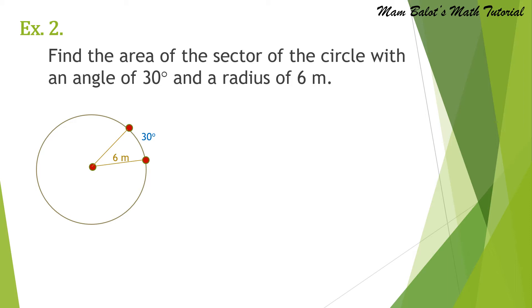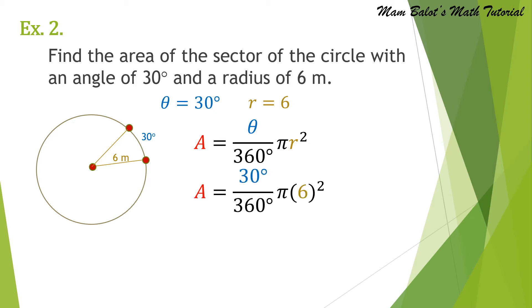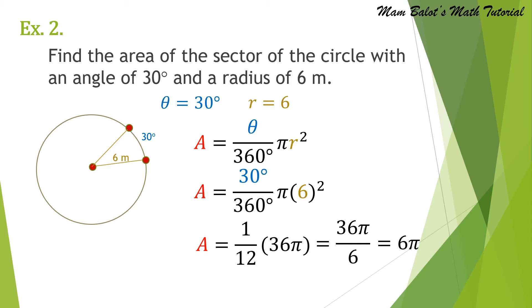Example number 2. Find the area of the sector of the circle with an angle of 30 degrees and a radius of 6 meters, as shown in the diagram. So we have theta equal to 30 degrees and the radius equal to 6. Using the formula of the area of the sector — theta over 360 degrees times pi R squared — we substitute the values: 30 degrees over 360 degrees times pi times 6 squared. So 30 over 360 reduces to 1 over 12, and pi times 6 squared is equal to 36 pi. Multiplying, we get 36 pi over 12, and dividing gives us 3 pi. So the area of the sector of the circle is equal to 3 pi.